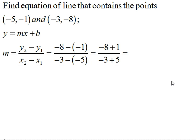And when I simplify this, I'm going to have -7/2. So in other words, my slope, my m, is -7/2.